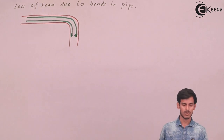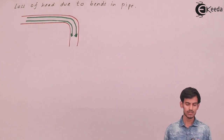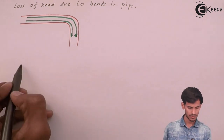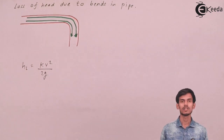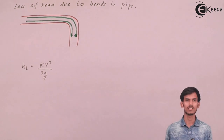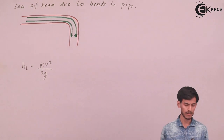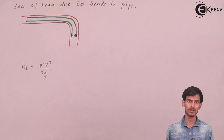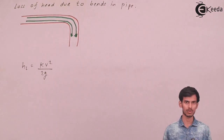When a pipe is bent — for example, turned downward by 90 degrees — there are losses at the bend. The formula for head loss due to a bend is kV² / 2g, where V is the velocity of the fluid inside the pipe and k is the coefficient of bend. The value of k will be provided in the question.